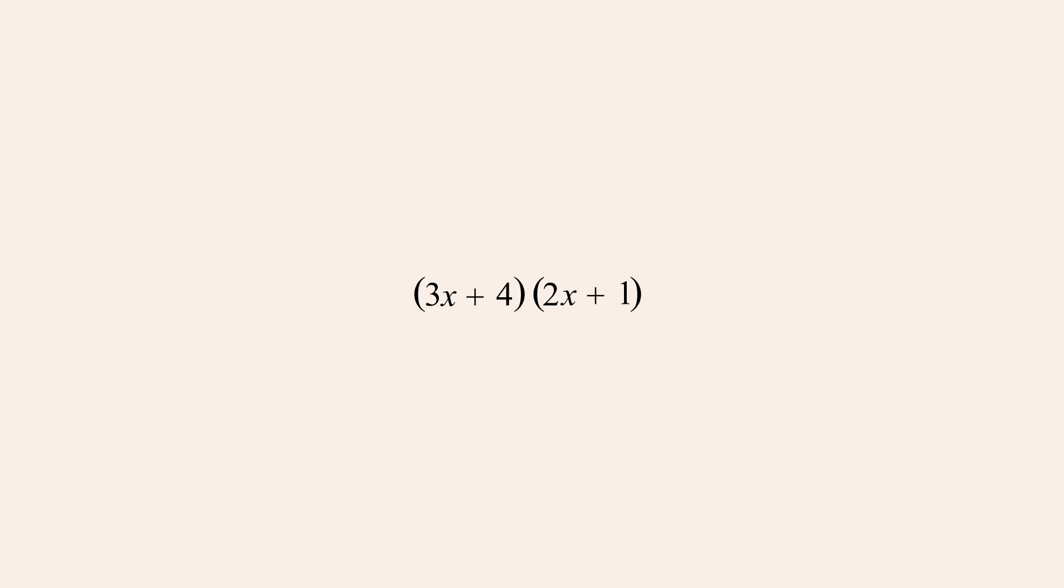FOIL is an acronym which stands for multiplying the first terms of the two binomials, then the outer terms.